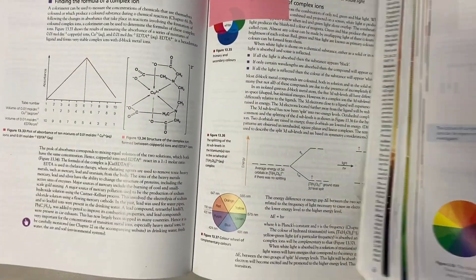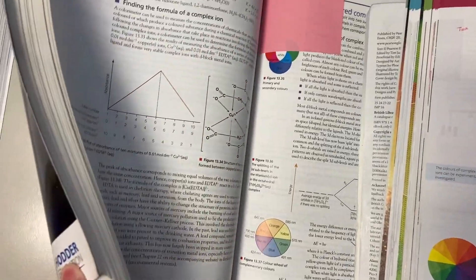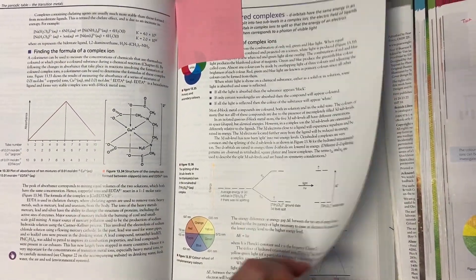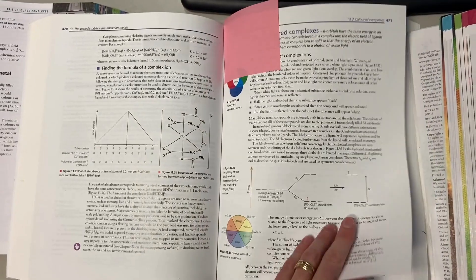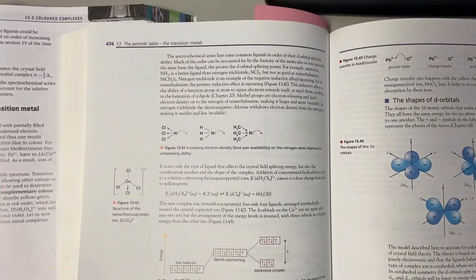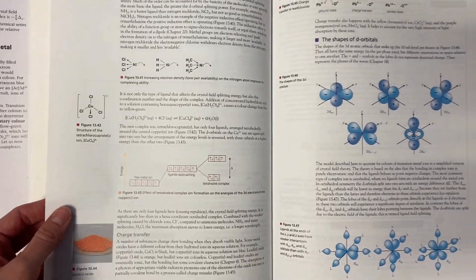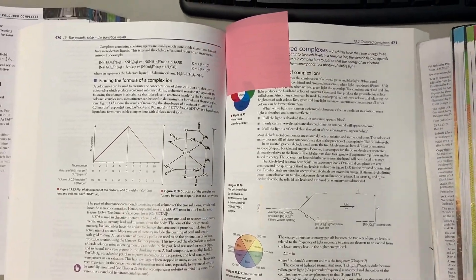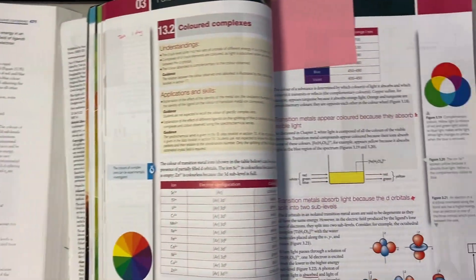And then we have the Hodder Education textbook. Here is their 13.1 colored complexes. There is more information but again, it's really set up like a college textbook. The print is small, there's not a lot of bolded words, it is very dense when you're reading it. It's not written for a high school student in my opinion.